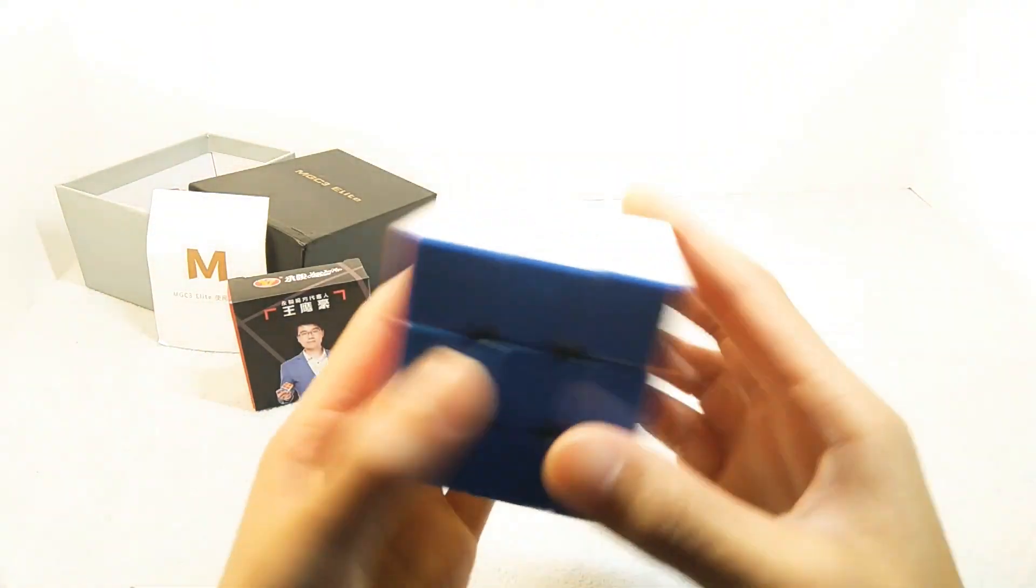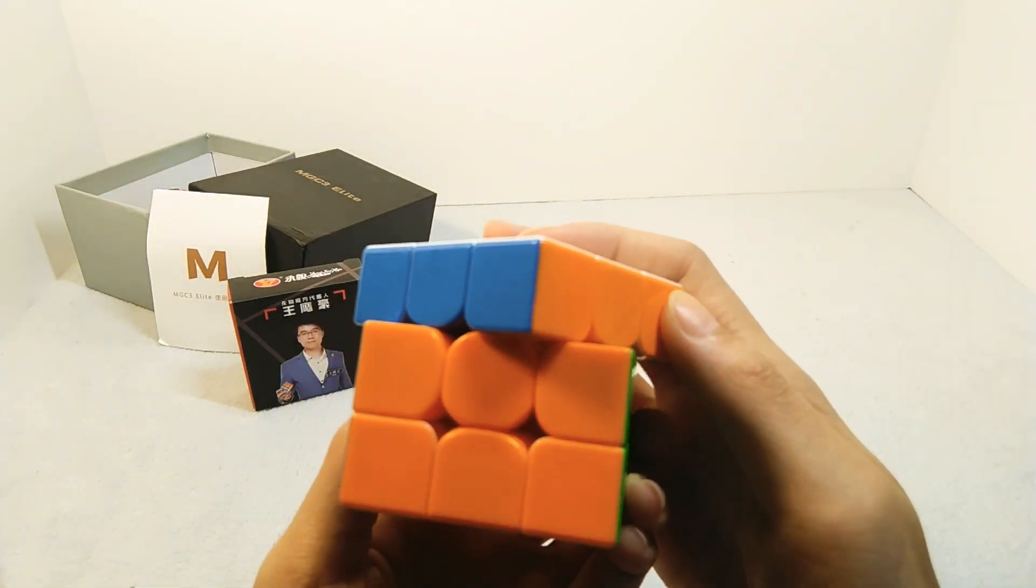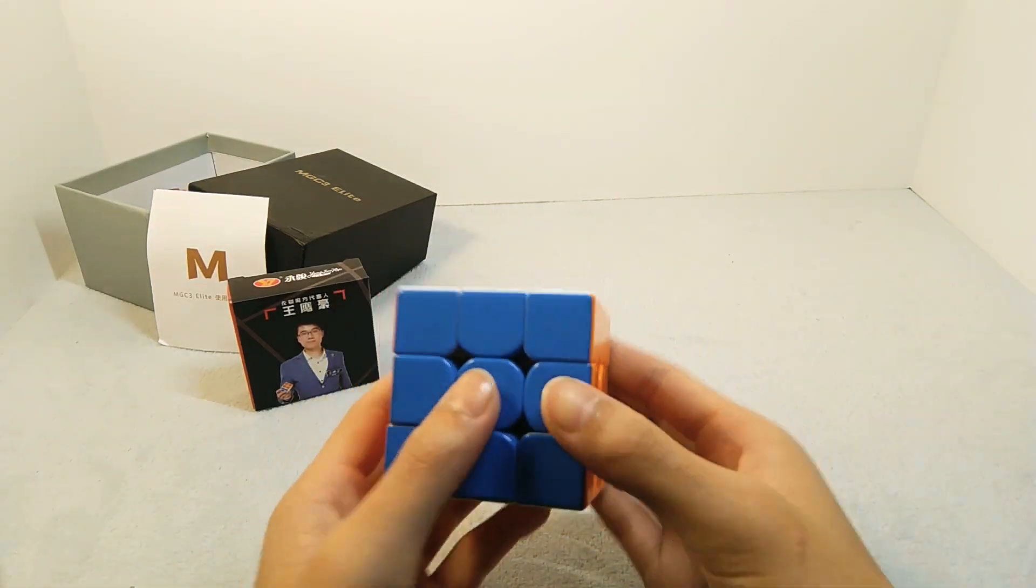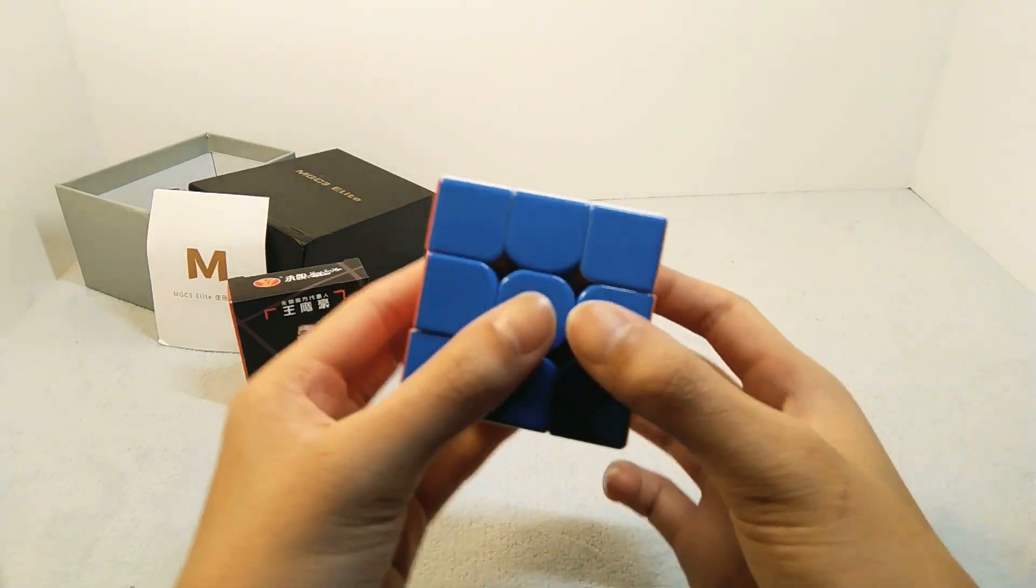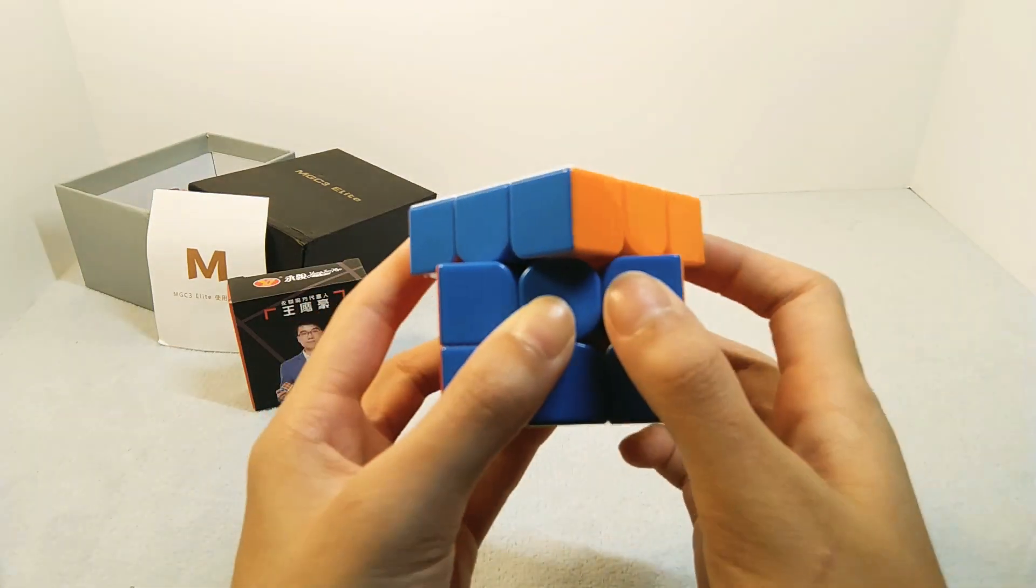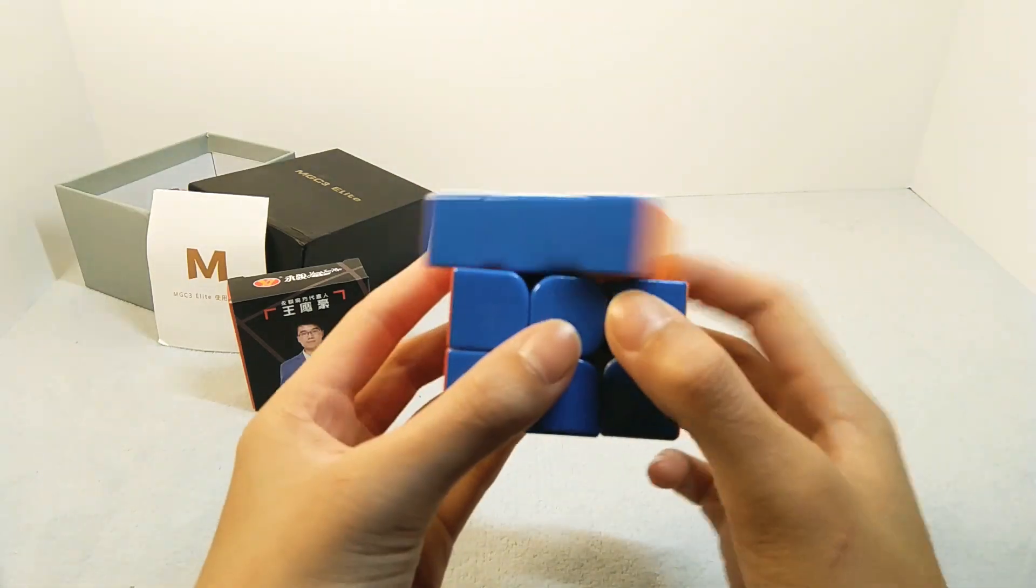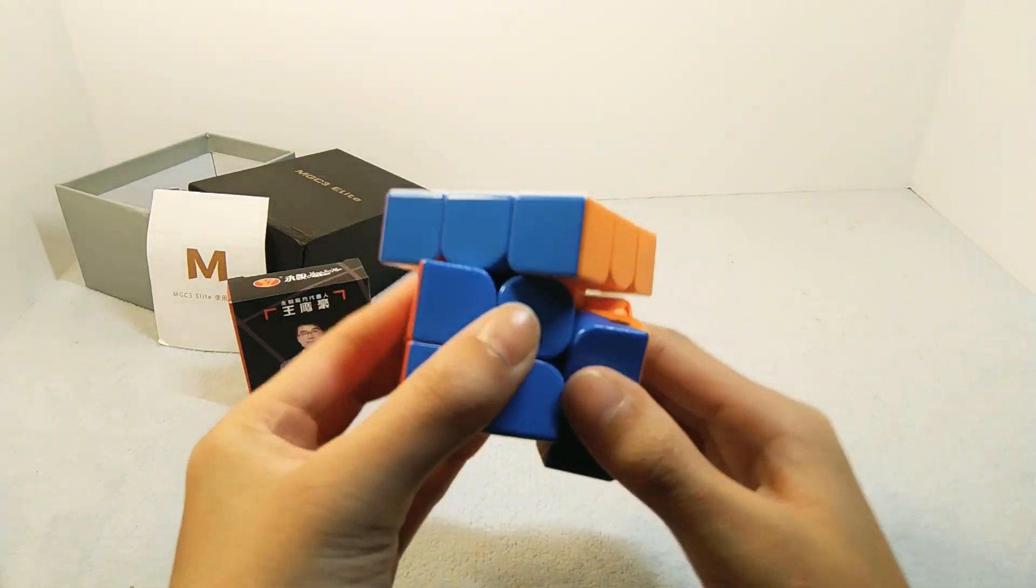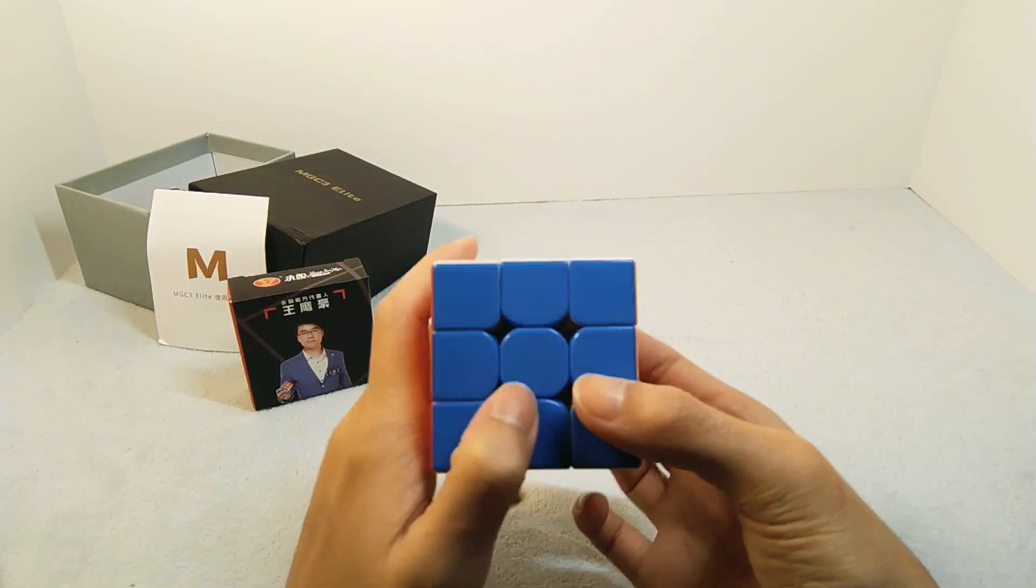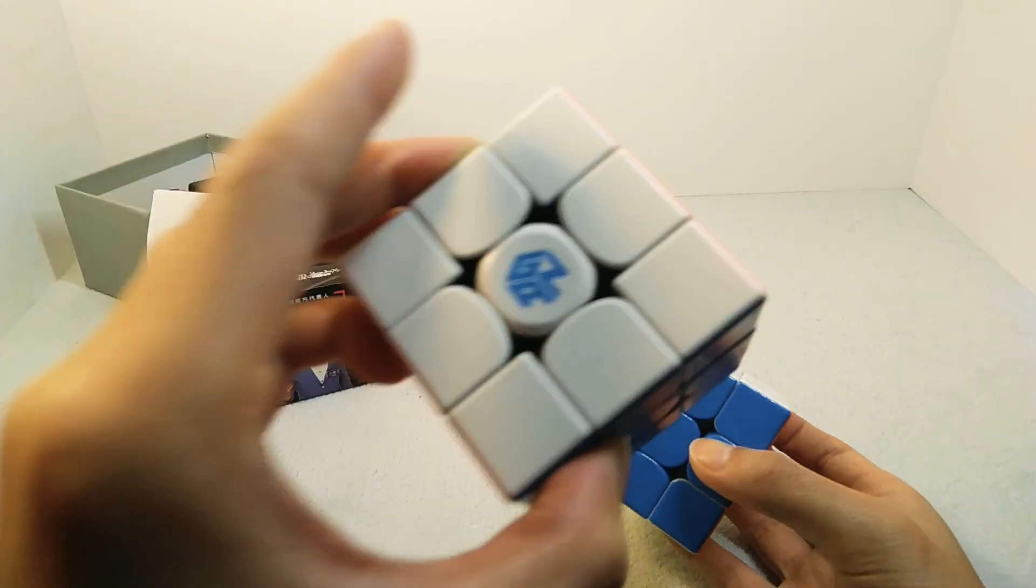Let's get right into the corner cutting. So 45 degrees, very clicky snappy, over 45 it's really good. This is called, I don't think this is reverse corner cutting but it's like super good. Over 45 reverse corner cutting, 45. This is like really good corner cutting, very good, super good.